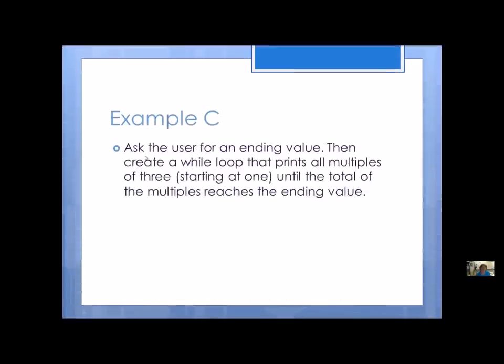Sample C: ask the user for an ending value, then create a while loop that prints all multiples of three starting at one, until the total of the multiples reaches the ending value. There's a lot going on here, but just like any math word problem, you throw out the stuff that doesn't really mean anything. We have an ending value — do we know when we start? I'm printing multiples, so I'll start at zero or one and go until a total. I've got some clues right there.